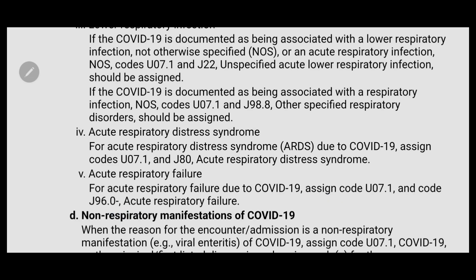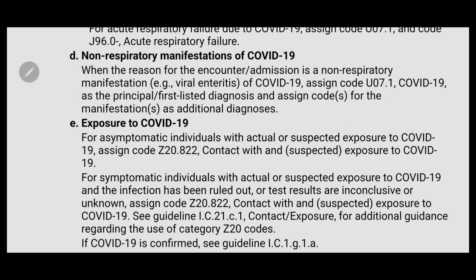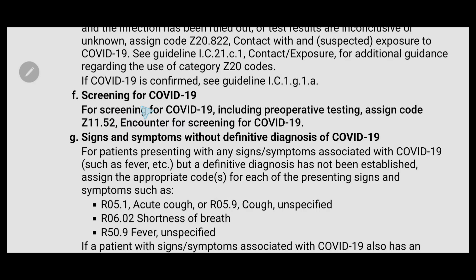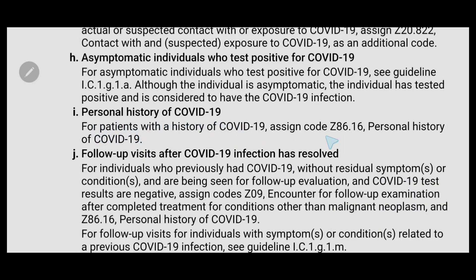For non-respiratory manifestations of COVID-19, assign U07.1 as the first diagnosis and the additional code for the manifestation. For exposure to COVID-19, the code is Z20.822. For screening for COVID-19, assign Z11.52. For patients presenting signs and symptoms associated with COVID-19 but where a definitive diagnosis has not been established, assign the code for the signs and symptoms.